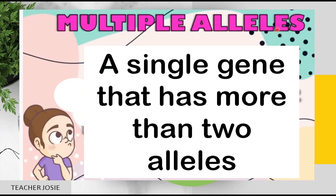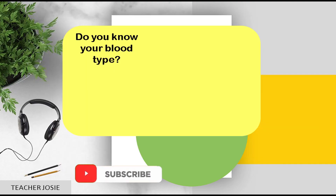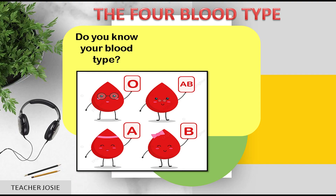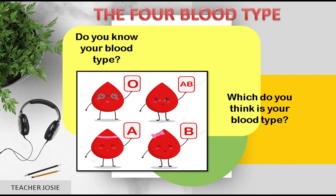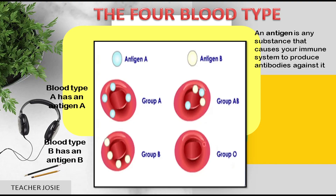Next, multiple alleles — a single gene that has more than two alleles. One good example is blood type. There are four blood types: type O, type AB, type A, and type B. The blood type has antigens. An antigen is any substance that causes your immune system to produce antibodies against it. Blood type A has antigen A, blood type B has antigen B, blood type AB has antigen AB, while blood type O has no antigen.